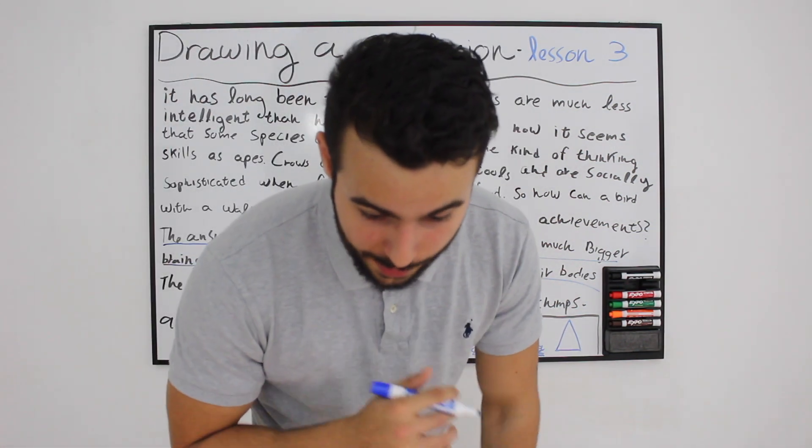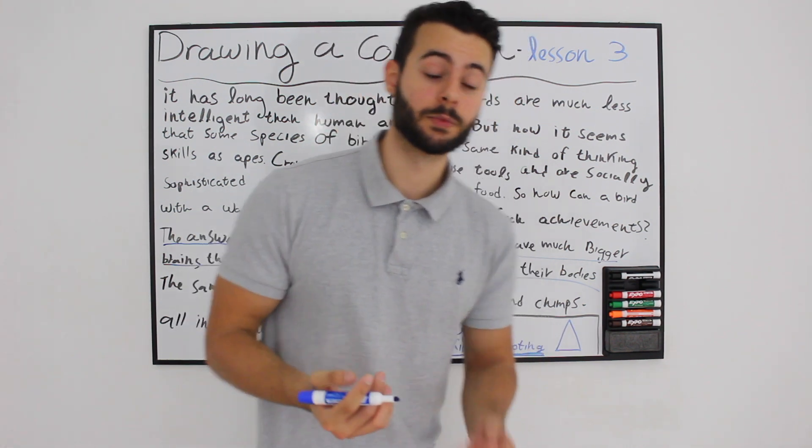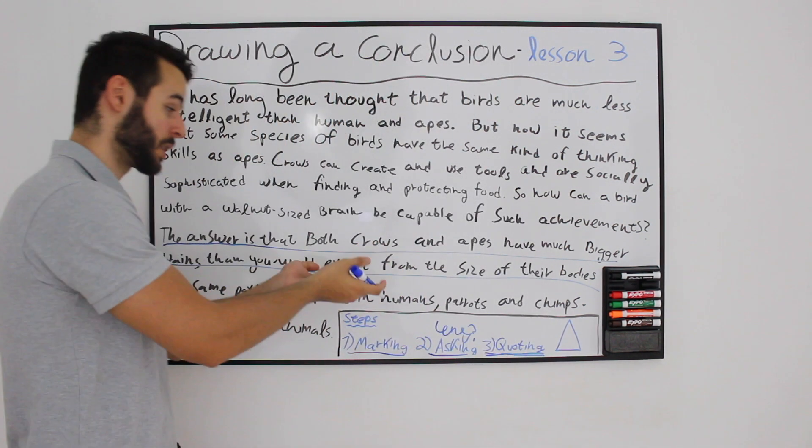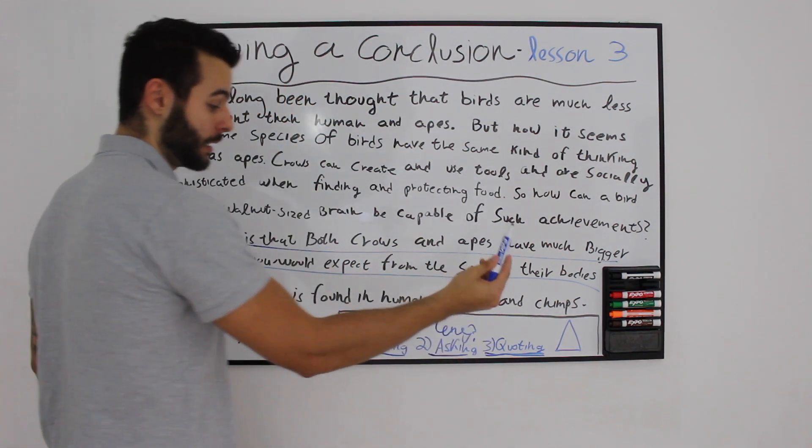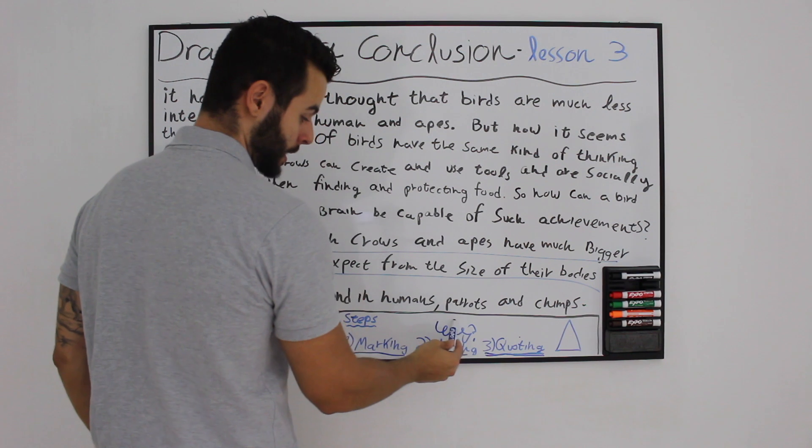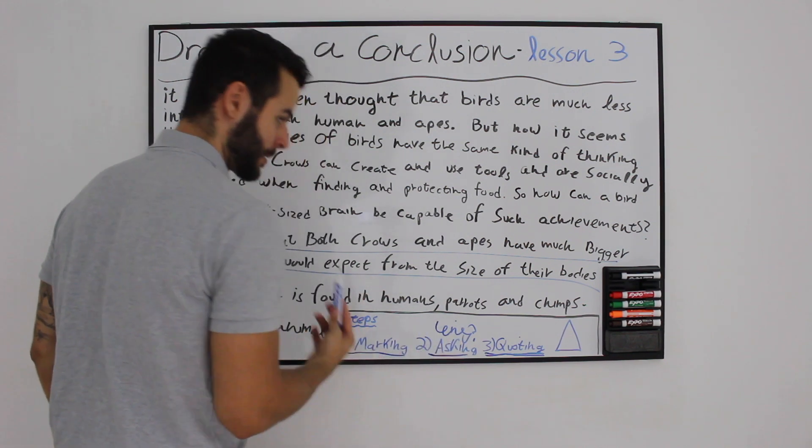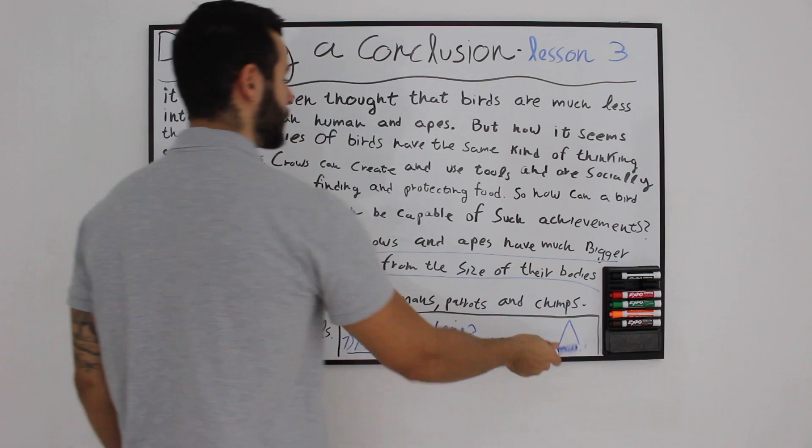Relative brain size is a better indicator of intelligence than absolute brain size, which is exactly what we mark inside the text and is exactly what we can quote. Ask yourself why, and we mark inside the text using the triangle method.